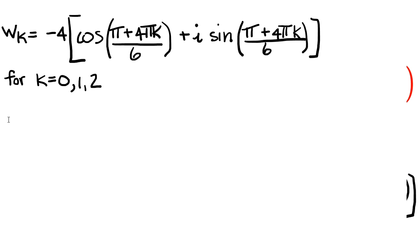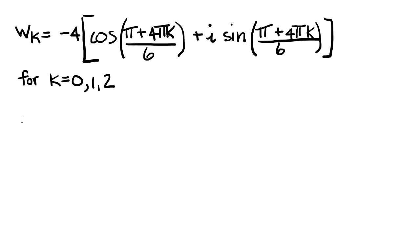So according to my formula then, I'm going to see what happens when k equals 0. w0, so it's going to be the first root, w0, that's going to equal -4 times cosine π/6, because the 4πk is going to go away, plus i sine π/6.